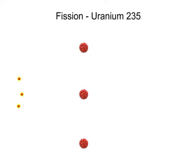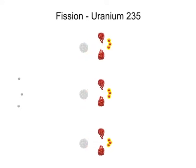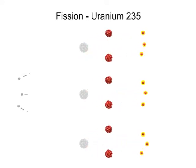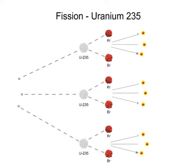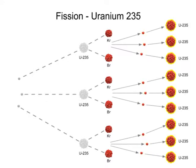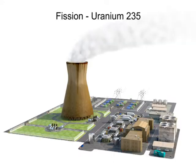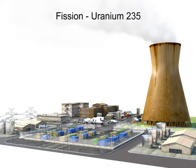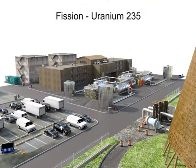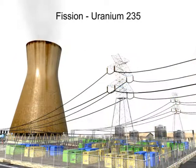The three forcefully ejected neutrons can each strike an atom of uranium, resulting in, in the case of an atomic bomb, a catastrophic chain reaction. The nuclear fission process is also the source of energy used to operate nuclear power plants. In a controlled environment, the tremendous heat generated by splitting uranium-235 is used to produce steam that drives turbines to generate electricity.